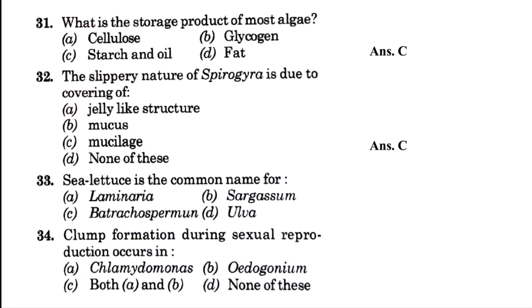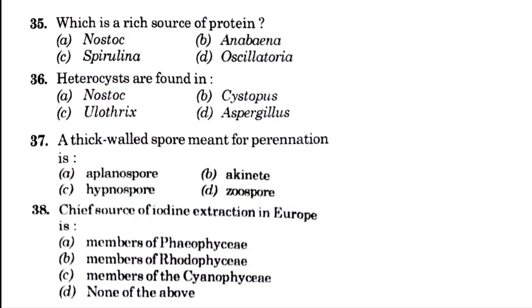Sea lettuce is the common name for — blank: Laminaria, Sargassum, Batrachospermum, or Ulva. The answer is option D, that is Ulva. Clump formation during sexual reproduction occurs in — blank: Chlamydomonas, Oedogonium, both Chlamydomonas and Oedogonium, or none of the above. The answer is option A, that is Chlamydomonas. Which is a rich source of protein? Nostoc, Anabaena, Spirulina, or Oscillatoria. The answer is option C, that is Spirulina, which is used as a single cell protein and has many types of economical importance in our day-to-day life.